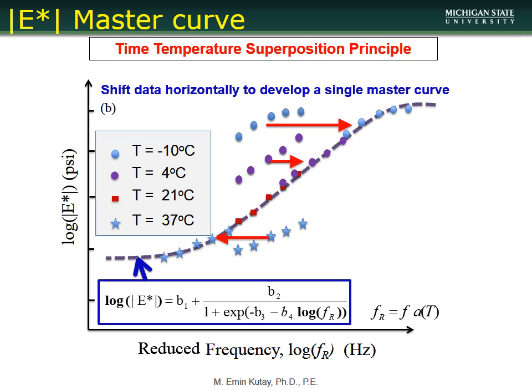We need to keep track of how much we shift left and right. Both axes are in logarithmic space, so shifting is actually multiplication of frequency by a constant A(T), called the shift factor. The reduced frequency equals frequency times the shift factor, and the shift factor is the logarithmic distance between the original and shifted positions.